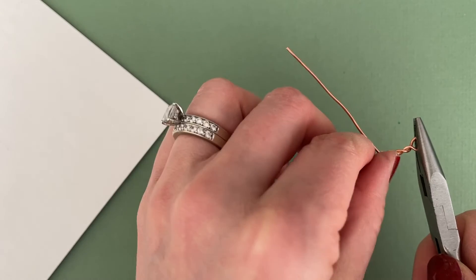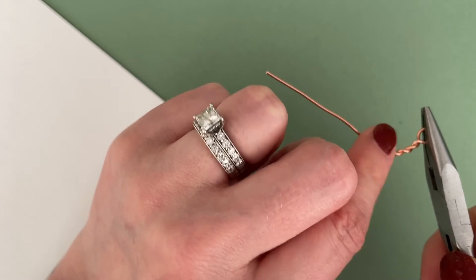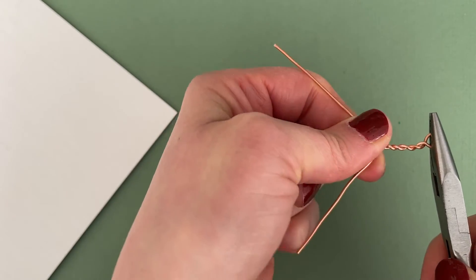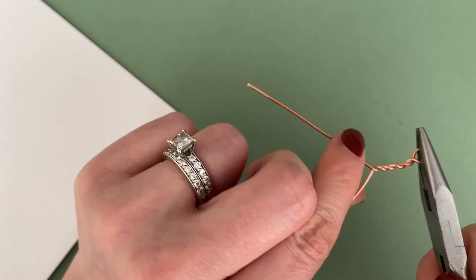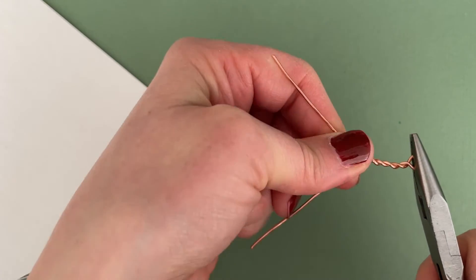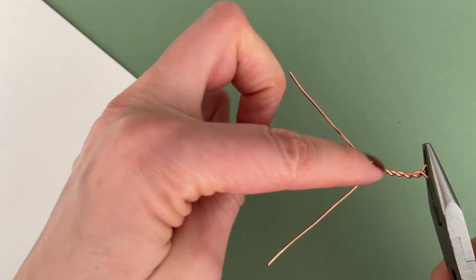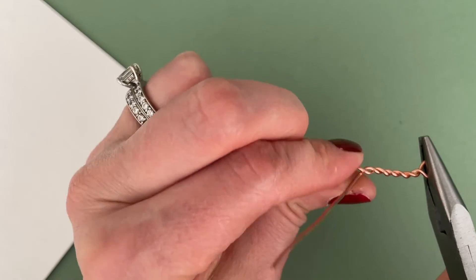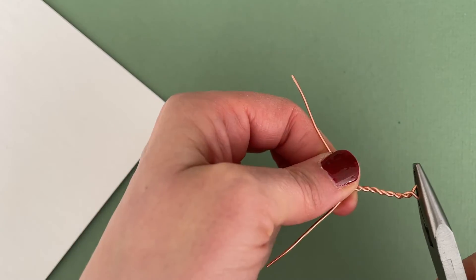If your wire is getting wider or narrower, you want to stop between each revolution so you can fix it before you move on. This is going to ensure a really tight and even twist the entire length of your wire.